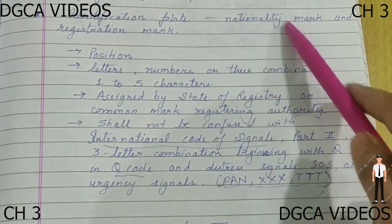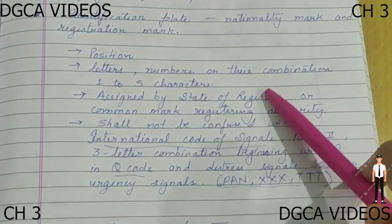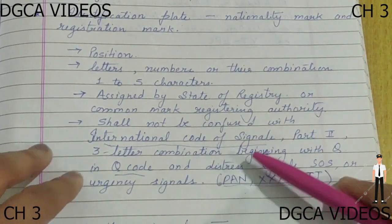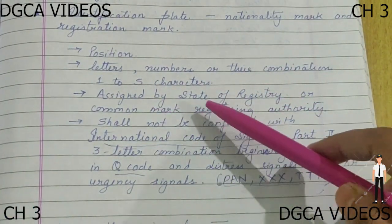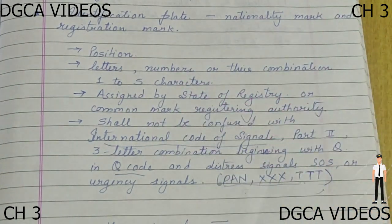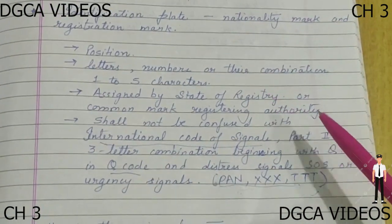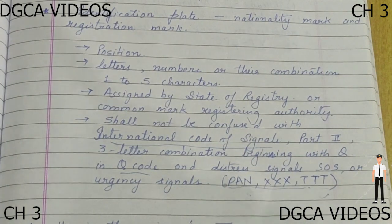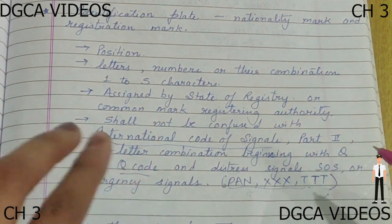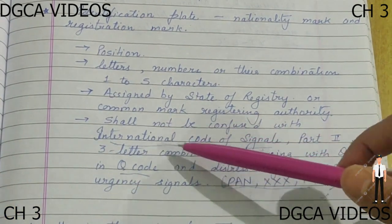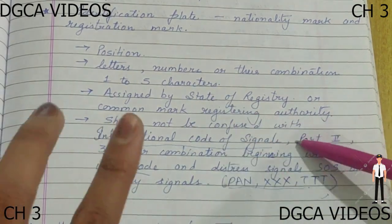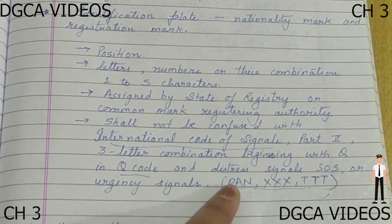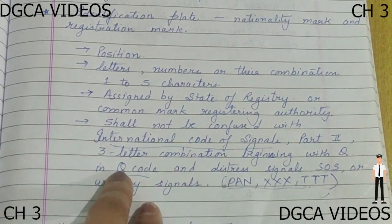The nationality mark and registration mark consists of letters, numbers, or a combination of both, and should be one to five characters long. It is assigned by the state of registry or the common mark registration authority. Also, the registration mark and nationality mark should not be confused with any urgency signals, distress signals, or those in the international code of signals part two. Specifically, it should not be confused with the Q codes, distress signal SOS, urgency signal PAN, or XXXTTT.